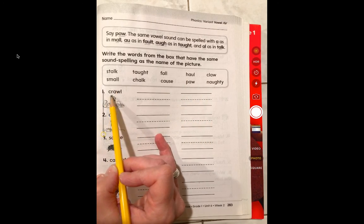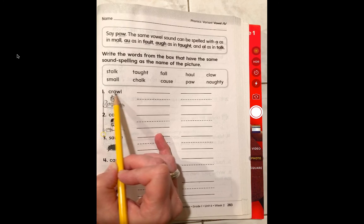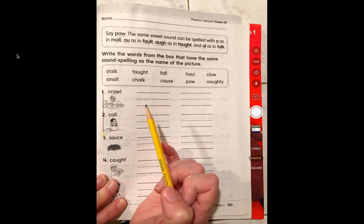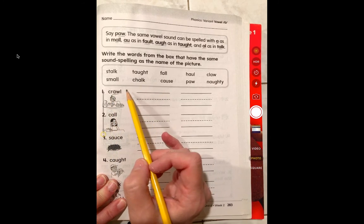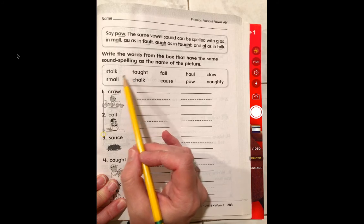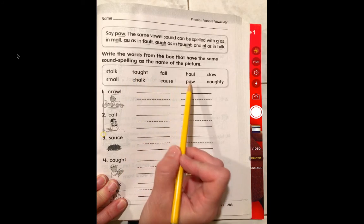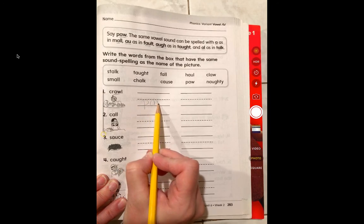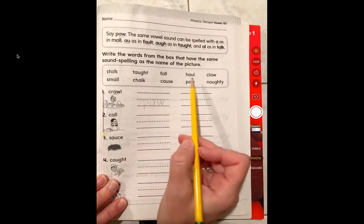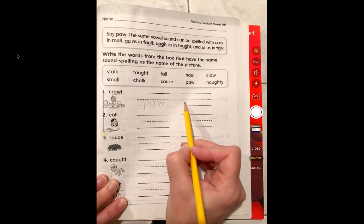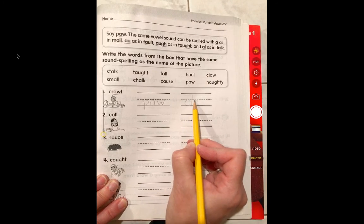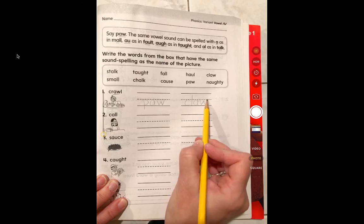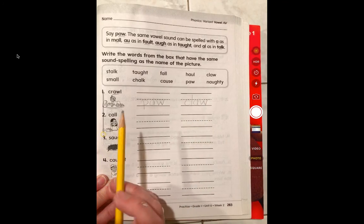So you're looking here and this says crawl. You'll notice right there it is A-W. So you're going to look up here and see if you can find any other ones that have the aw. Paw. So you would write P-A-W. What else? Claw. You would write C-L-A-W. And you would do that for each of these.